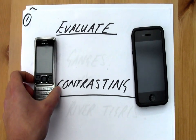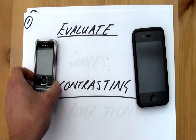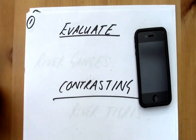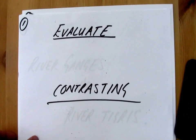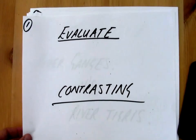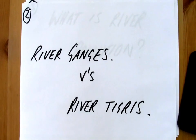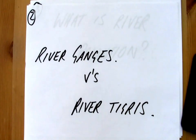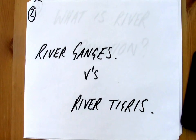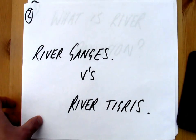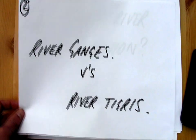So what we have done there is we have looked at how they are different, maybe how they are similar, and we have come to some conclusions as to which one we think might be the best. Now you are going to have to do exactly the same with your assessment — evaluating and comparing two contrasting rivers: the river Ganges, which flows through India, and the river Tigris, which flows through Baghdad in Iraq.